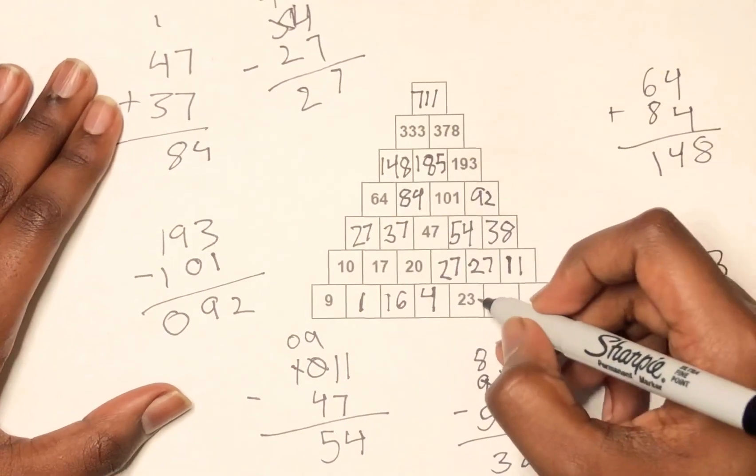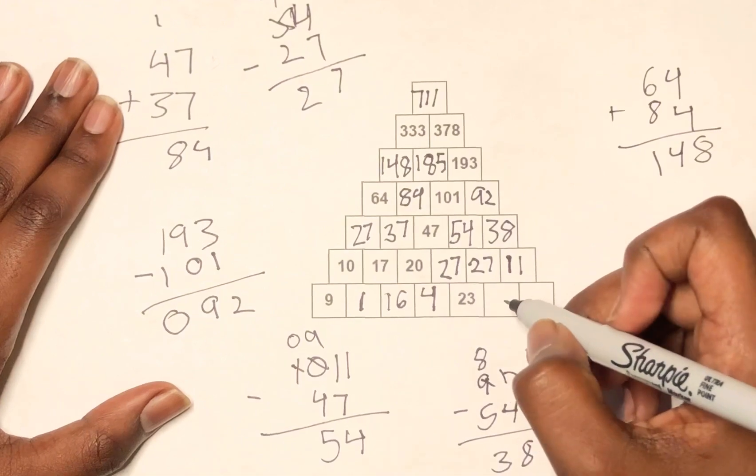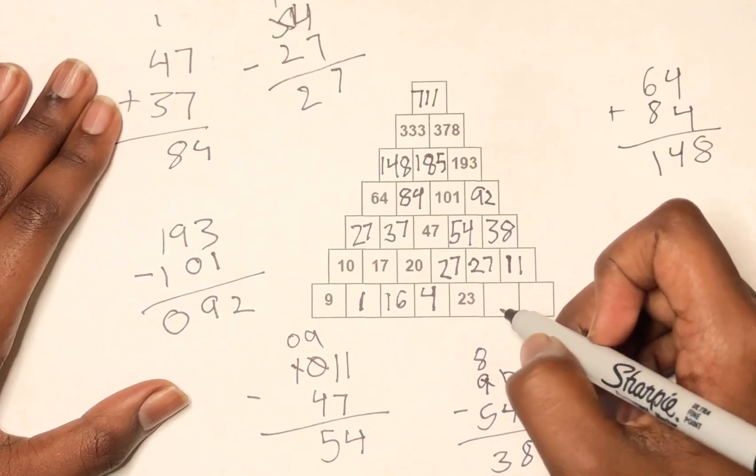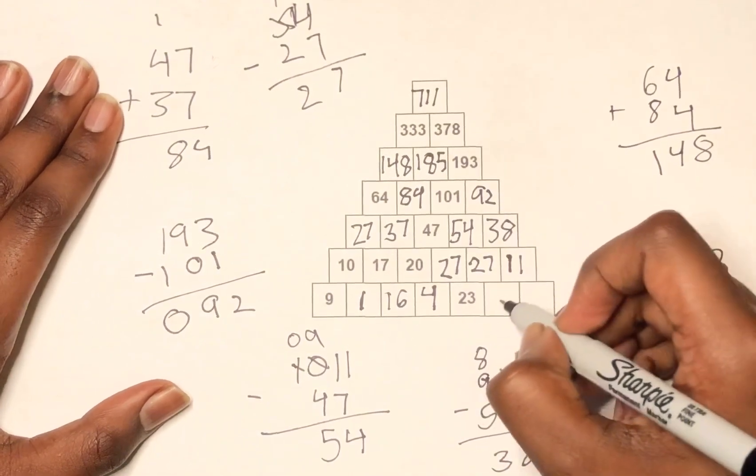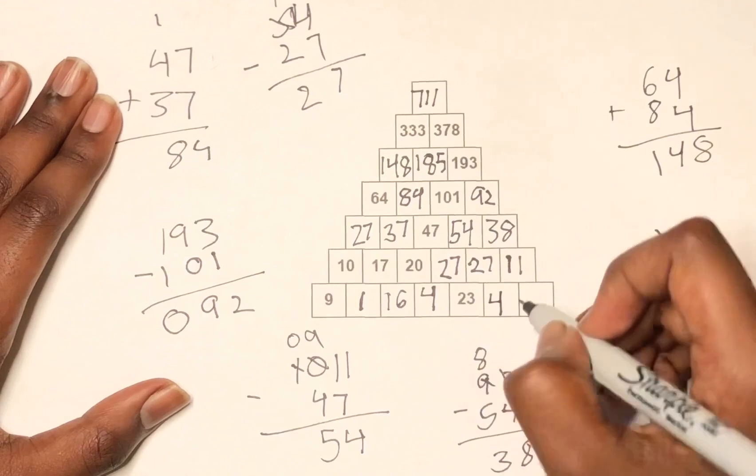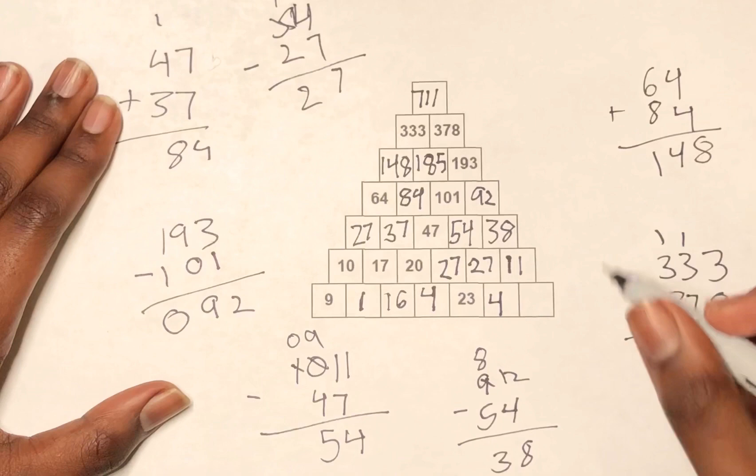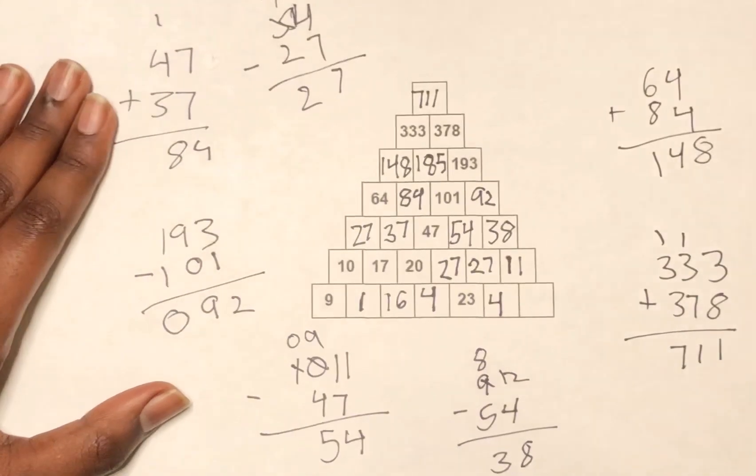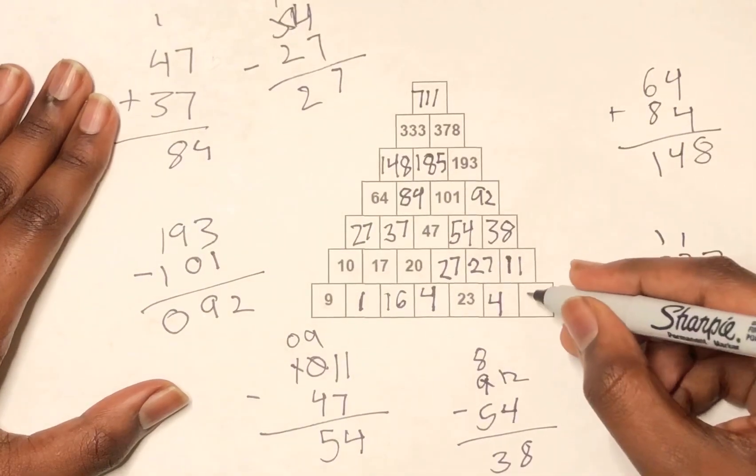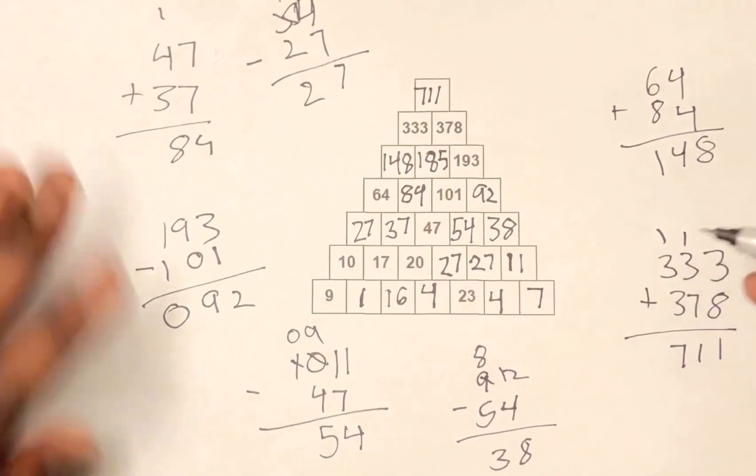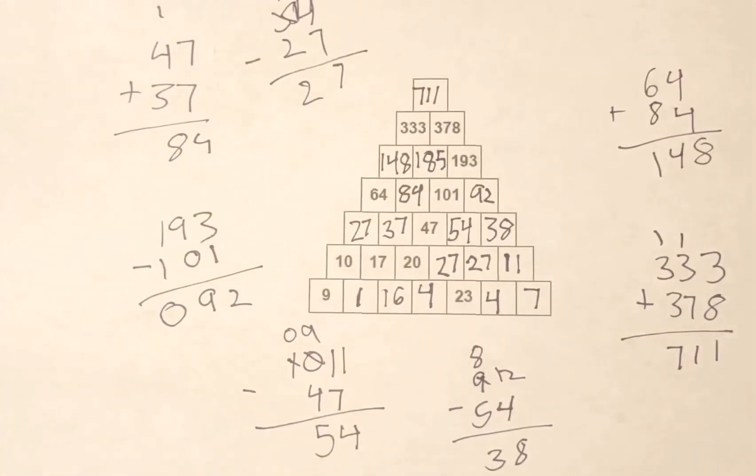And then 23 plus 27. No, 23 plus 4 equals 27. And then 11 minus 4 equals 7. And that is how you solve the number pyramid.